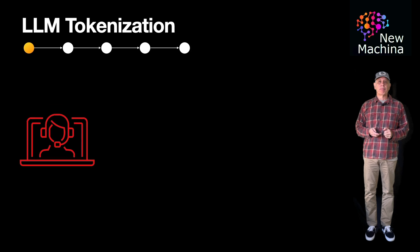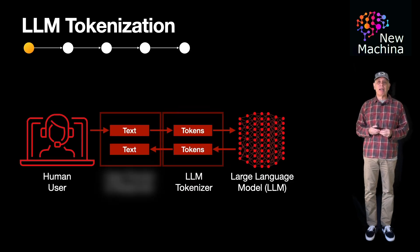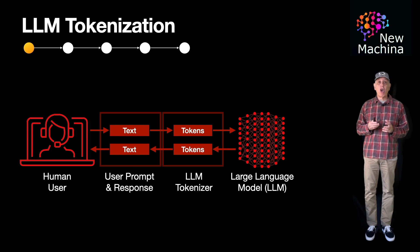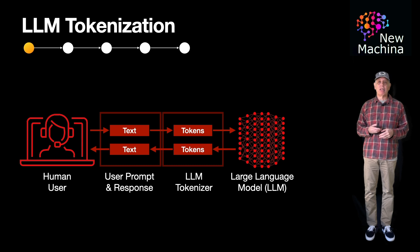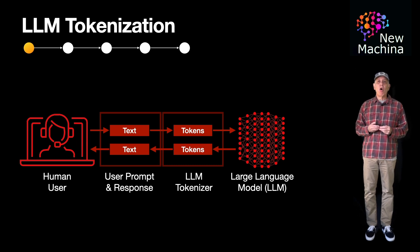LLM tokenization refers to the process of breaking down text into manageable units called tokens. Tokenization divides text into smaller units such as words, subwords, or characters, which are the basic elements for processing by an LLM. When the LLM receives the prompt from the user, the LLM tokenizer converts the text in the user prompt into tokens.